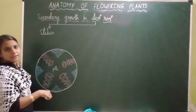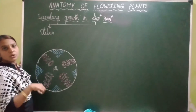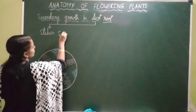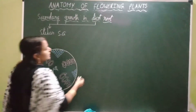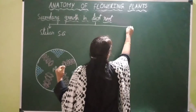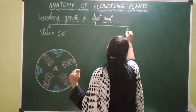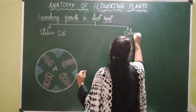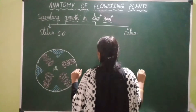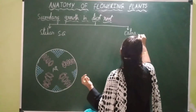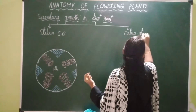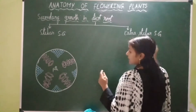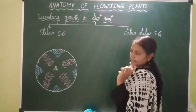So the secondary growth which occurs inside the stele is called stelar secondary growth. I am writing secondary growth as SG. It also occurs by extra stelar secondary growth — that is, the secondary growth that occurs outside the stele.